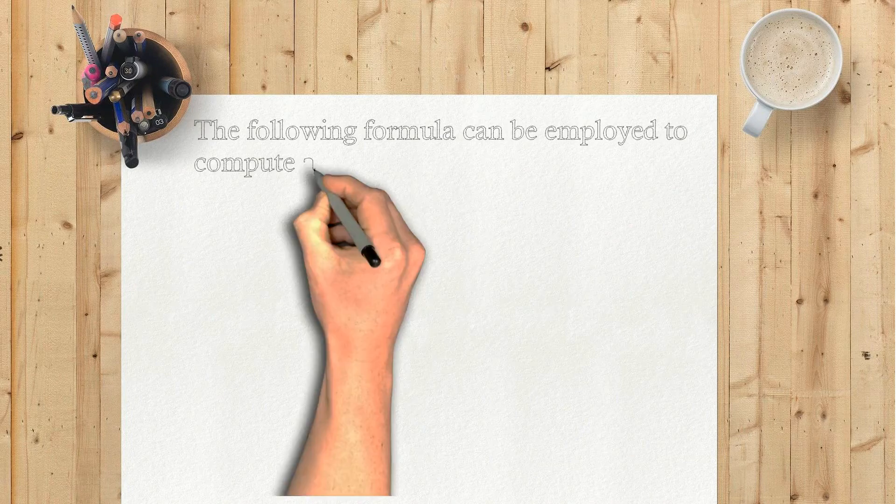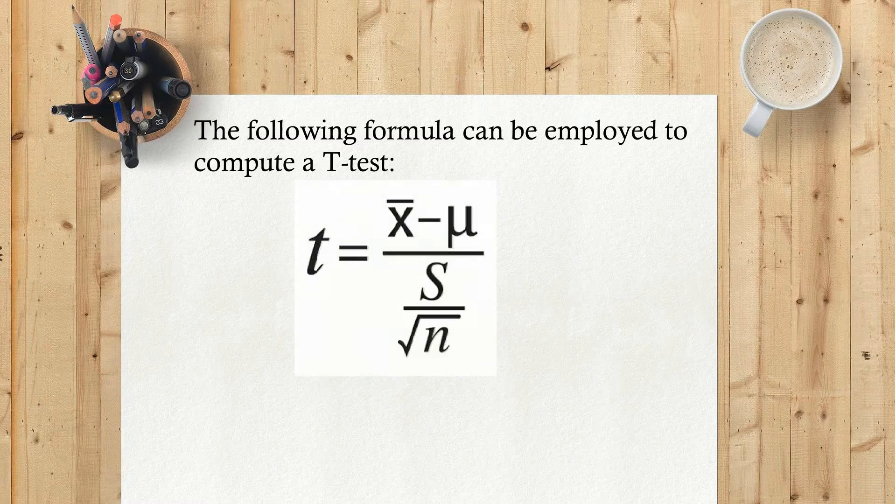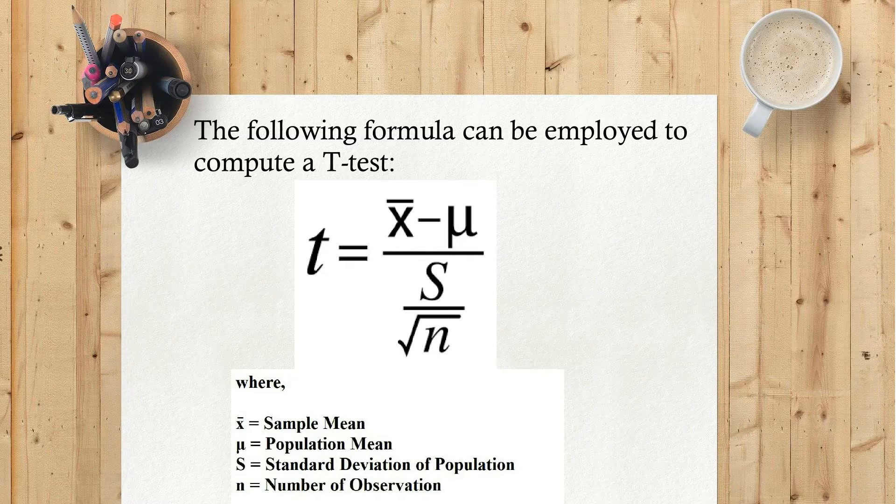Formula for one sample t-test. The following formula can be employed to compute a t-test: t-test equals x̄ minus μ divided by s divided by square root of n, where x̄ equals sample mean, μ equals population mean, s equals standard deviation of sample, n equals number of observations.